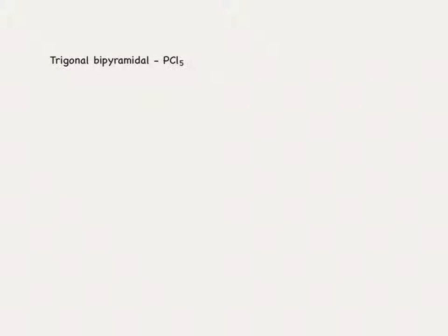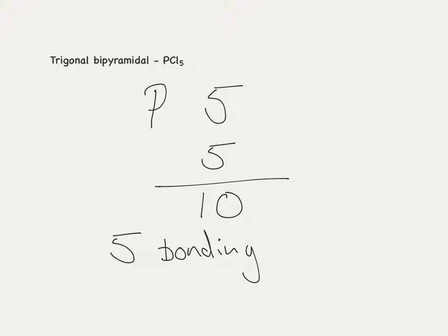PCl5 then. The phosphorus has five electrons in its outer shell, five covalent bonds with chlorine, which gives it a total of ten electrons. That means we have five pairs of electrons, and all of these are bonding pairs. We have zero lone pairs of electrons.